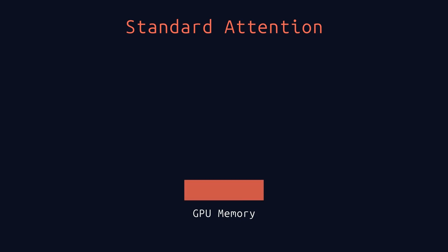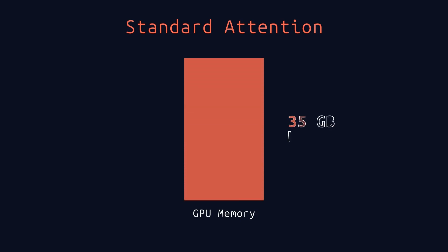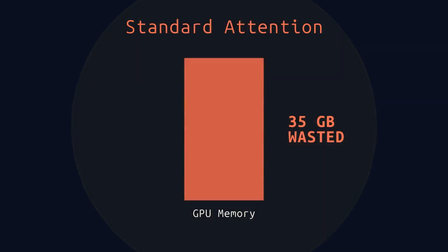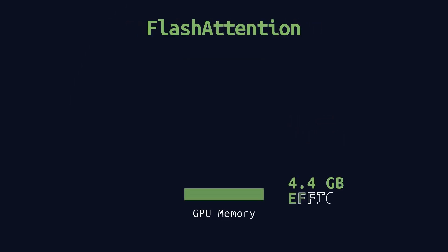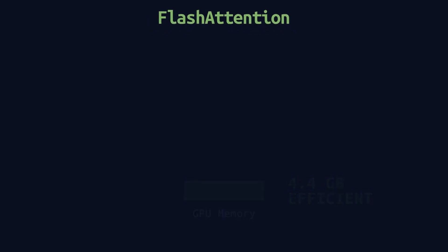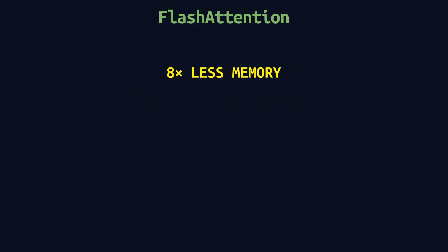In the Flash Attention 1 paper, one benchmark went from 35 gigabytes of memory traffic down to 4.4 gigabytes — about an 8 times reduction. Flash Attention 2 pushes that even further, often reaching 10 to 20 times less memory movement than naive implementations. At this point, Flash Attention-style kernels are the default in modern LLM stacks.